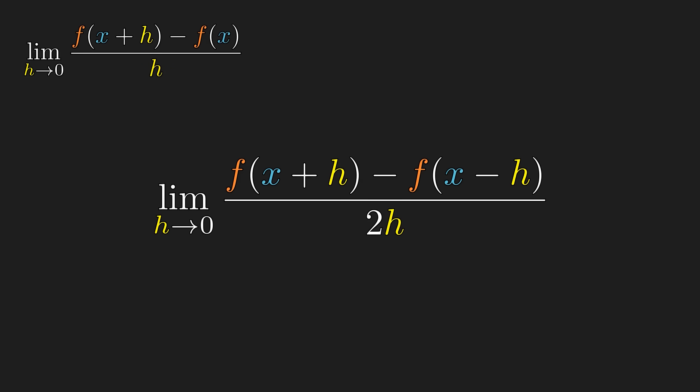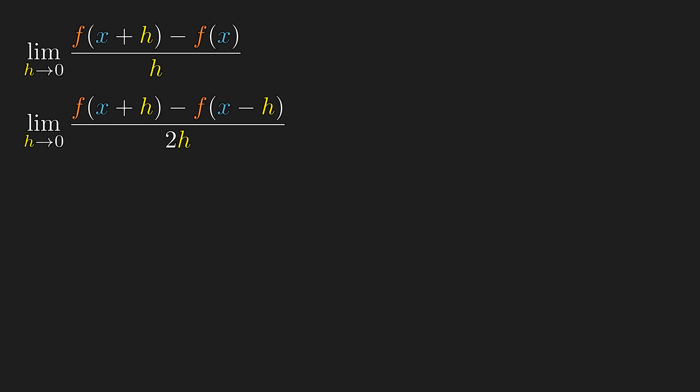Why can't we just take the limit of the central difference instead? Or for that matter, any other variance of the divided difference?